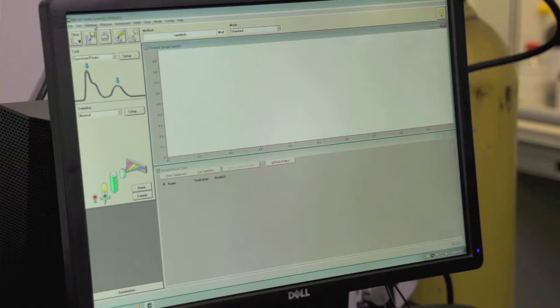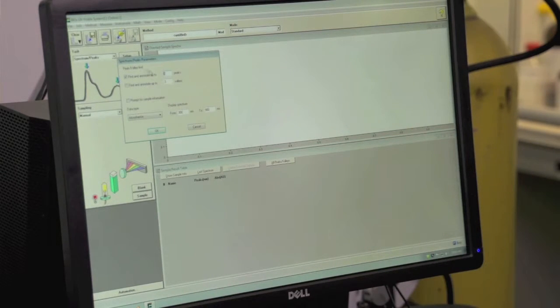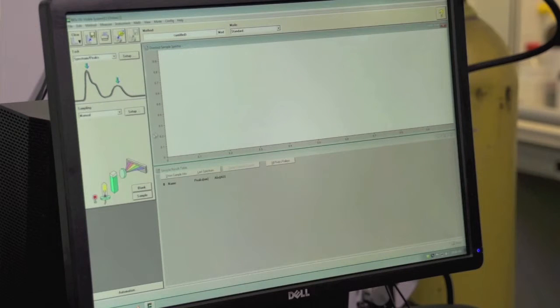You'll need to change the settings in order to investigate the relevant spectral region for the quantum dots. In order to do this, go to method, setup analysis, and you'll be looking at one peak in this case. So change it to one peak on the find and annotate up to one peak portion. Also, for the display spectrum, you'll want to change that to be from 200 nanometers to 400 nanometers. Click OK. Now the instrument is properly set up within the software to collect the data.